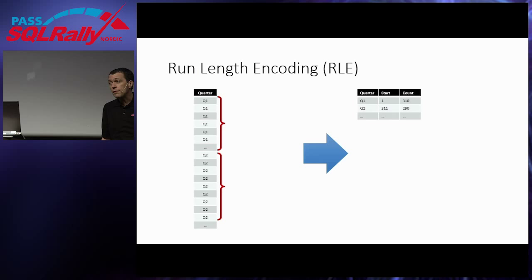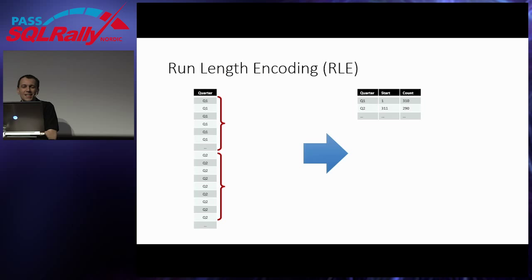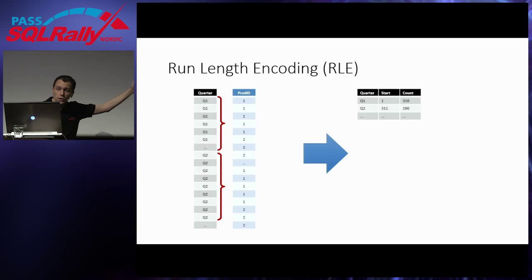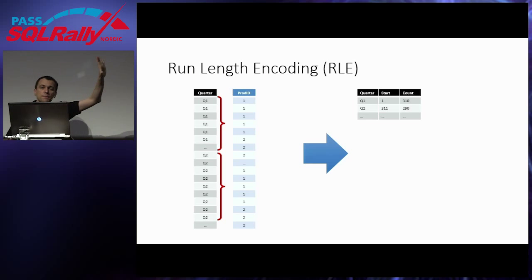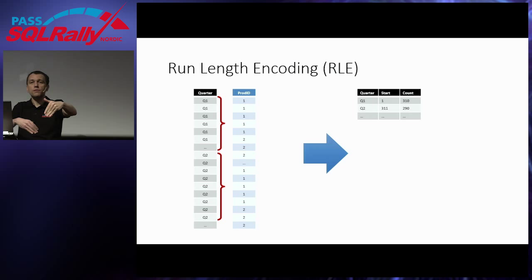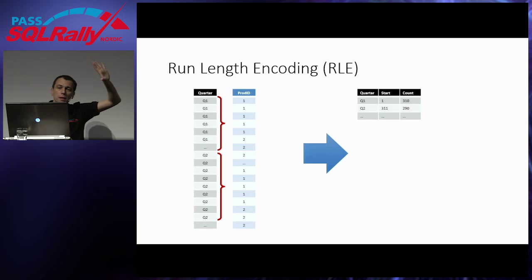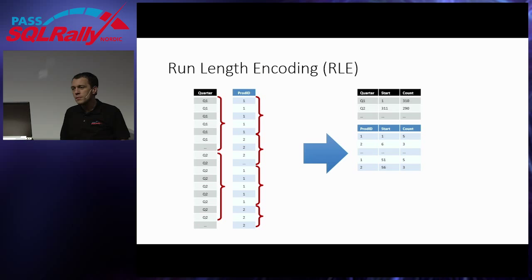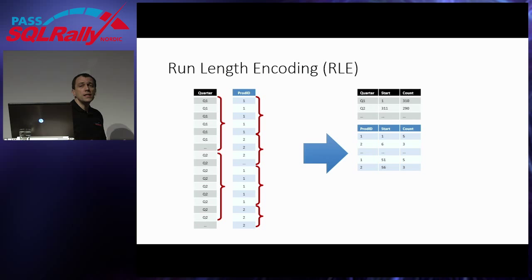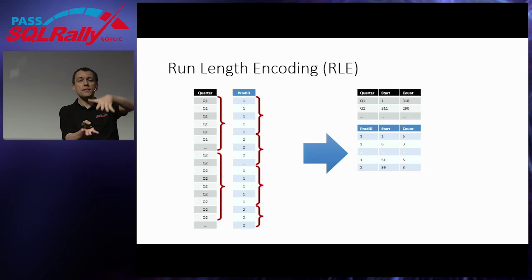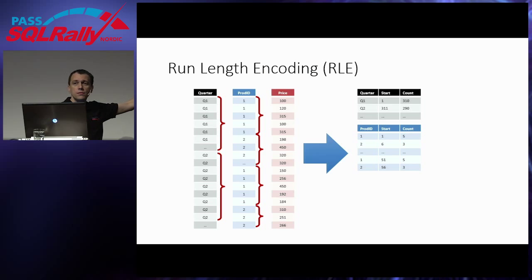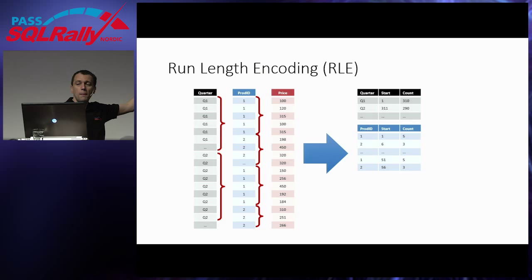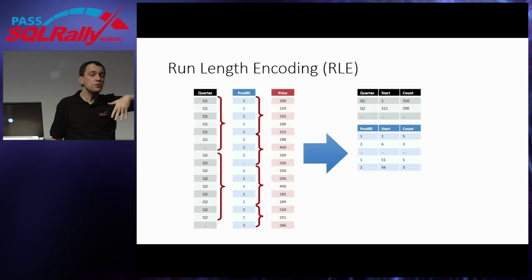If you sort rows by quarter, you get the best optimization for run-length encoding. But you can't have the same optimal order for every column. For the product ID column, even if sorted by quarter, you'll have product 1, 2, 3 for Q1, then again for Q2, so the compressed table has more rows than for quarter. The engine tries this algorithm, and if the resulting table is smaller than the original column size, the compression is applied. If a column has a unique value per row, the algorithm detects this and skips that compression.